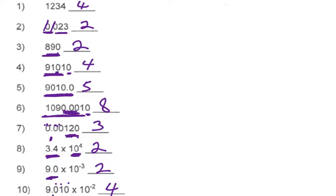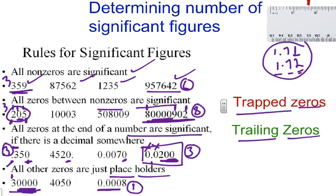So this is a brief review of how you assign significant numbers to a particular number when given. It's very important that we know how to do this because you can be asked to round things to the correct number of significant digits. I hope this video was a help, and as always, hard work plus sacrifice equals success — I'll see you guys soon.